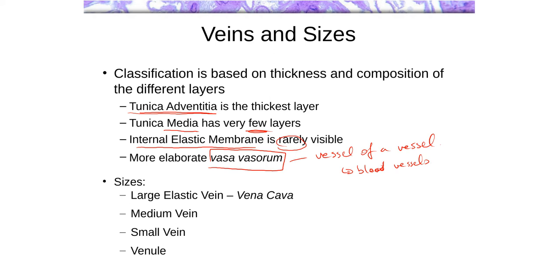In terms of sizes, large veins are elastic, so we will see some elastic fibers within the vena cava, but really not much beyond that. Medium veins, small veins, and venules do not have much elasticity within them — we are basically dealing with very thin layers of smooth muscle in the tunica media and a somewhat thicker tunica adventitia.